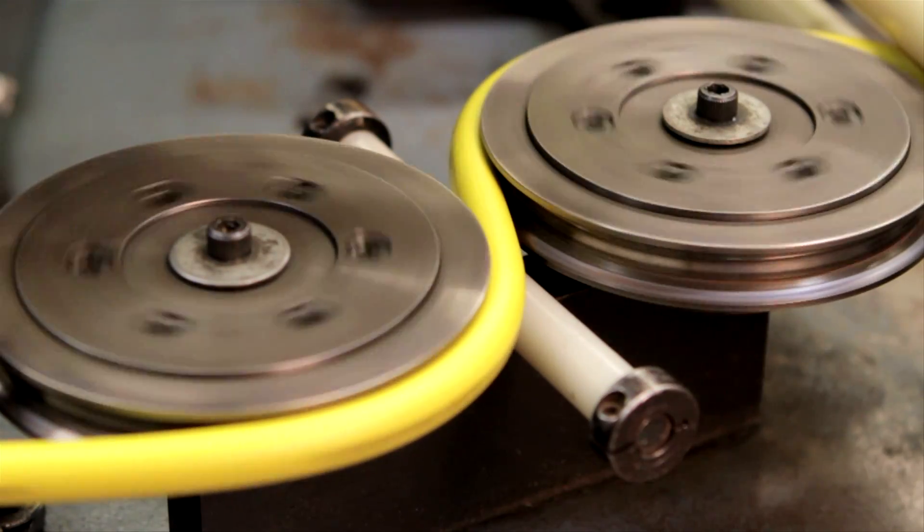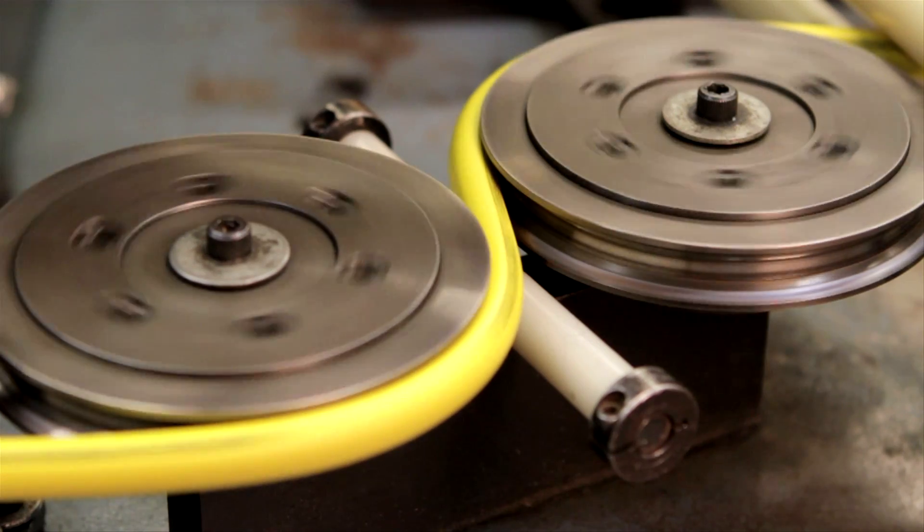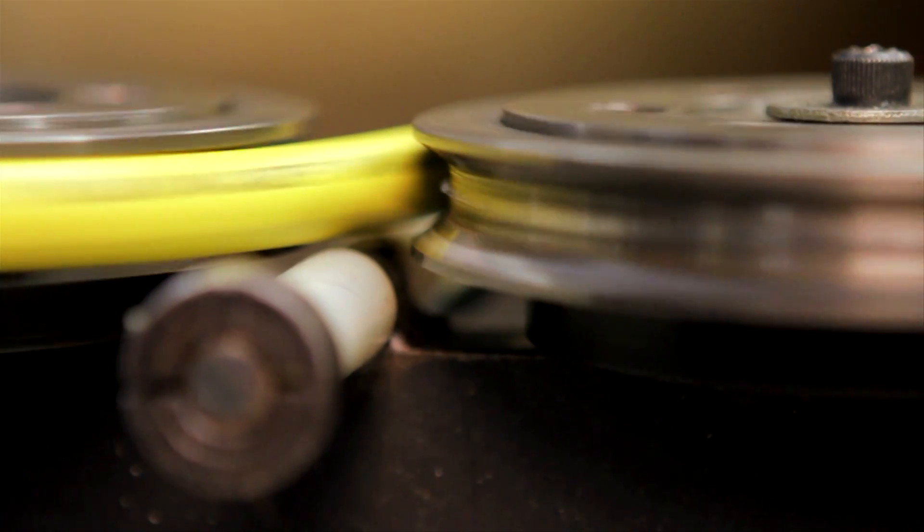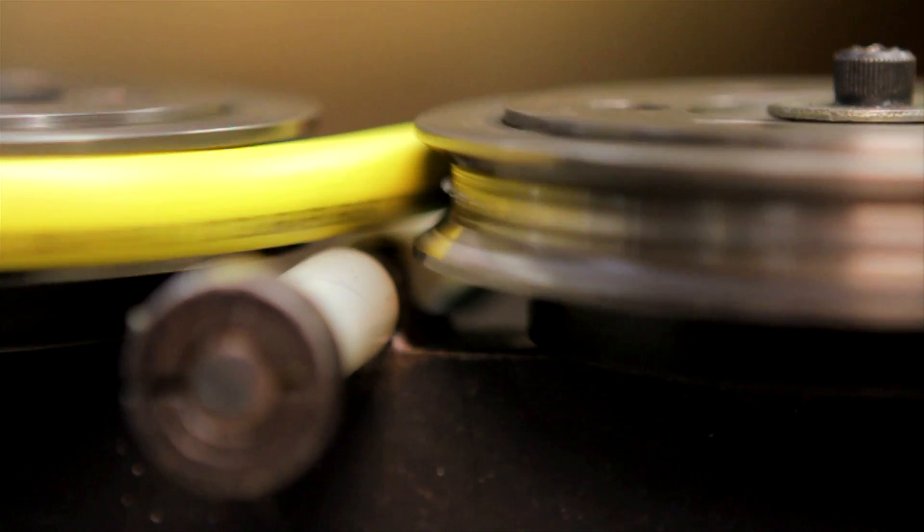Pinpricking is performed by a wheel that passes along the hose during the production process, pricking just the cover and stopping at the layer of reinforcement.